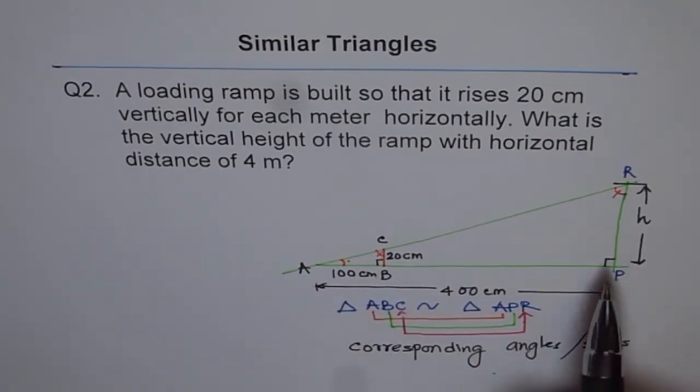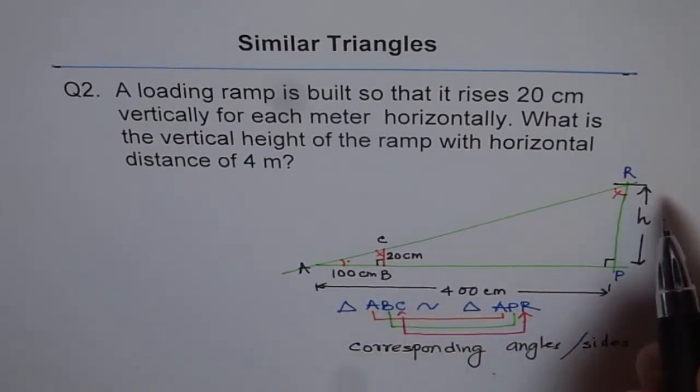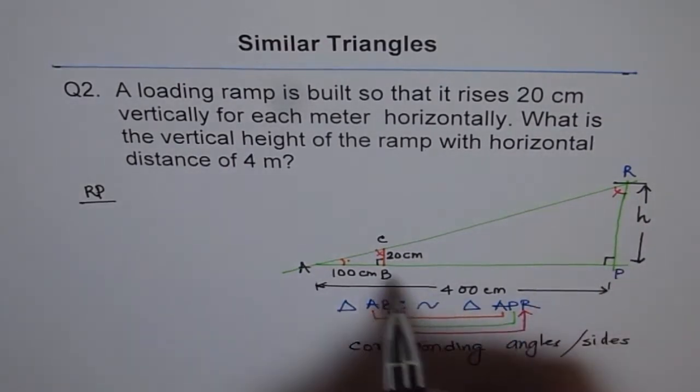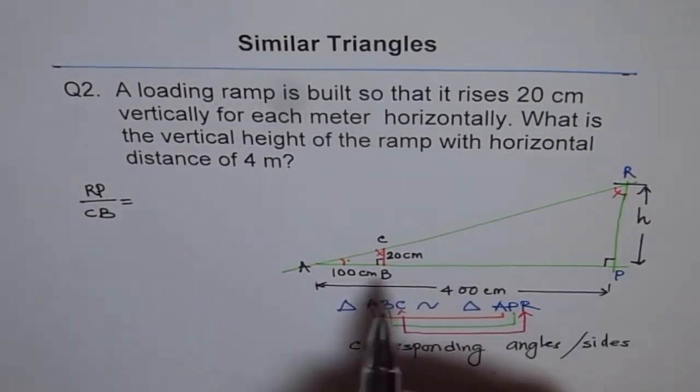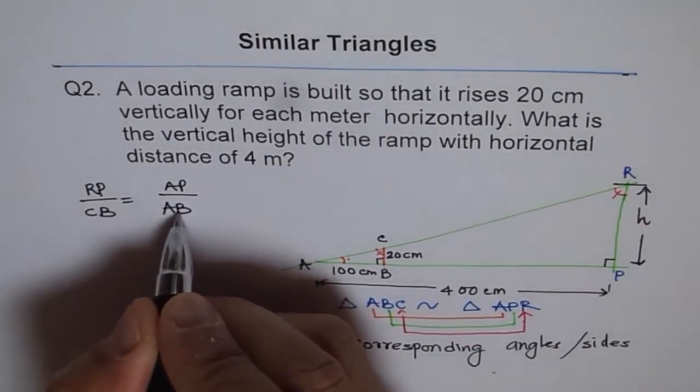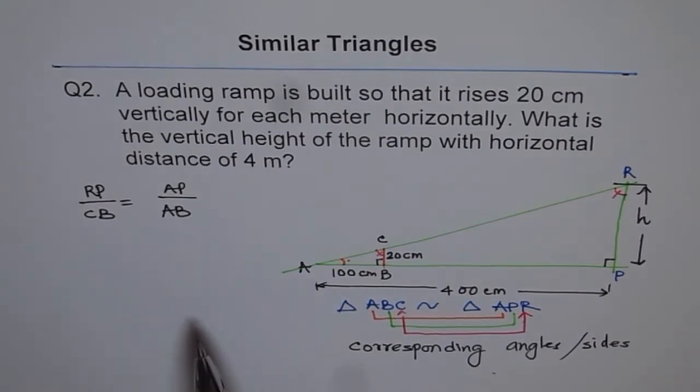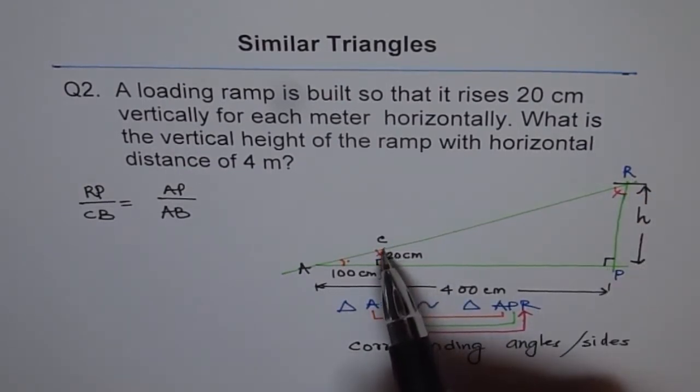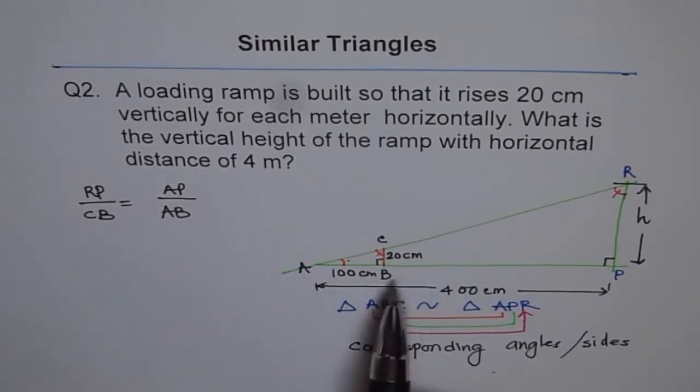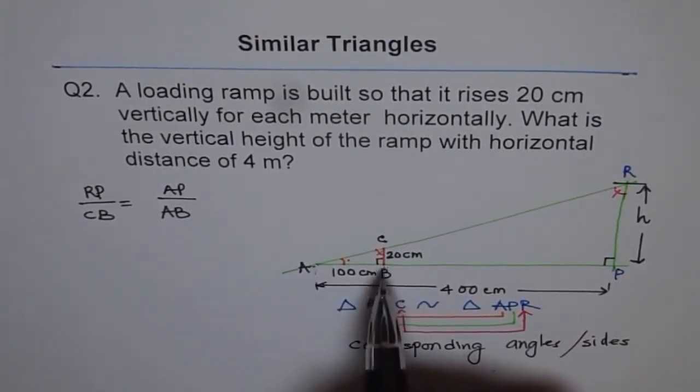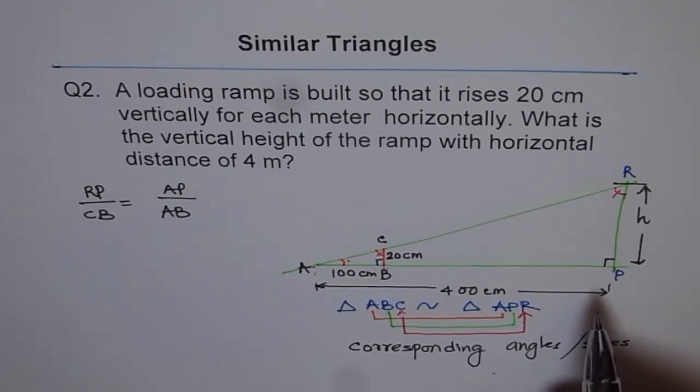Since the two triangles are similar, their side ratios are constant. Since we want to find height, we will write RP over the corresponding height CB. There are two ways of writing this. We are saying RP over corresponding side of the small triangle is equal to AP and the corresponding side AB. We could have also written RP over AP equals CB over AB. Both are correct statements.